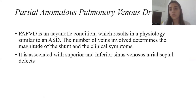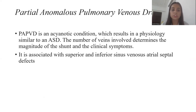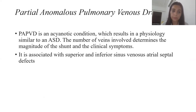Discussing partial anomalous pulmonary venous drainage: it is an acyanotic condition which results in a physiology similar to atrial septal defect. The number of veins involved determines the magnitude of the shunt and the clinical symptoms. It is associated with superior and inferior sinus venosus atrial septal defects.